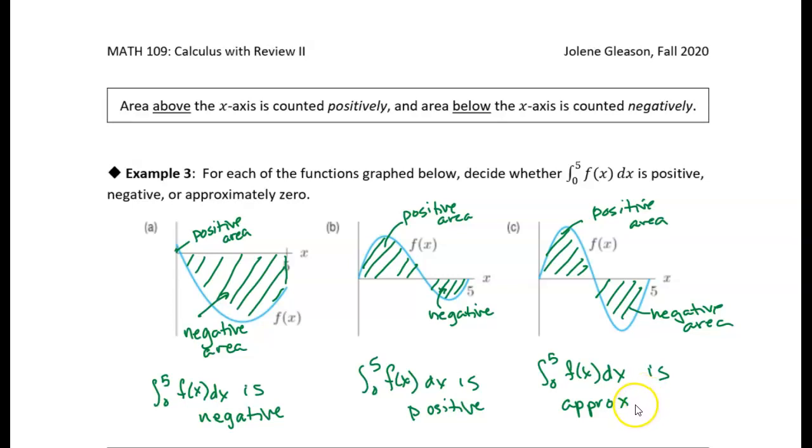So sort of like the first example where we had the ball being tossed up into the air and then coming back down, it fell downward just as far as it fell upward. And so the displacement was zero. And so in this case,